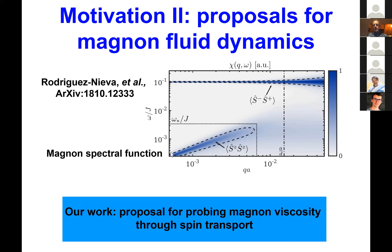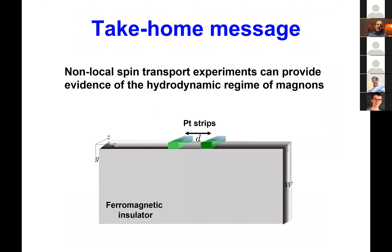One recent result by Rodríguez-Nieva working with Eugene Demler looked at a Heisenberg model and asked whether there is a regime where you can observe sound in magnons. They found a hydrodynamic sound mode in the magnon spectral function — bulk hydrodynamic behavior. In our work we wanted to look at the transport signature of this magnon fluid-like behavior — magnon viscosity — in spin transport, and to identify these signatures in the non-local spin signal via sign changes.